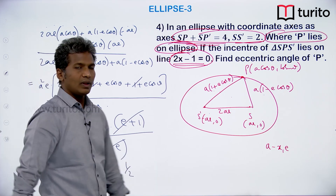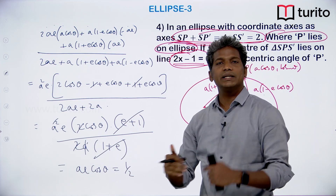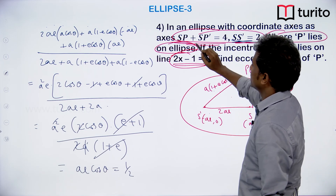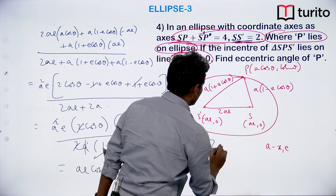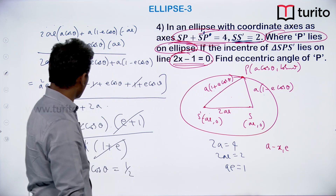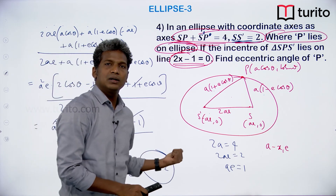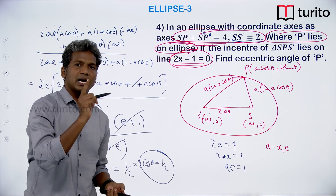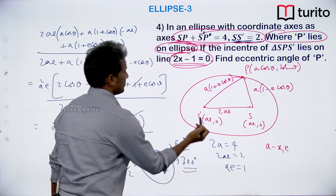Setting ae cos θ = 1/2. The distance between the two foci is 2 units, so 2ae = 2, giving ae = 1. Therefore cos θ = 1/2. Since θ ∈ [0, 2π], the solutions are θ = 60° and θ = 300°.